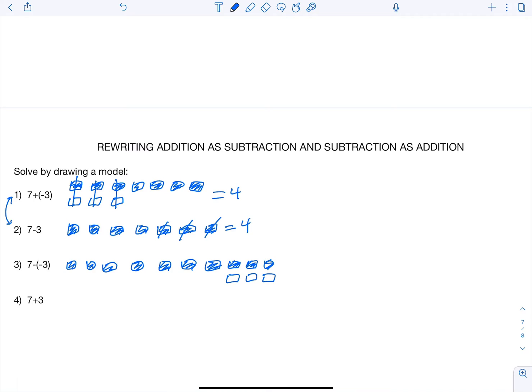All right. And we can see that if we want to take away three negatives, we can cross out those three negatives. And we wind up with an answer of positive 10.